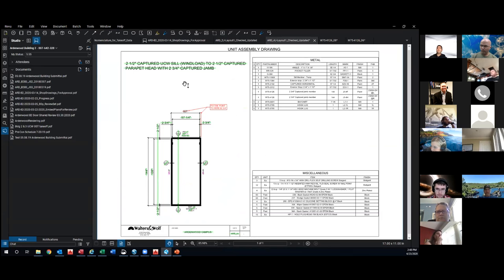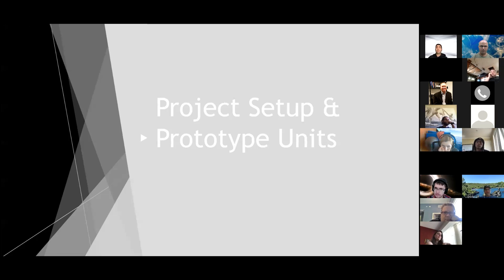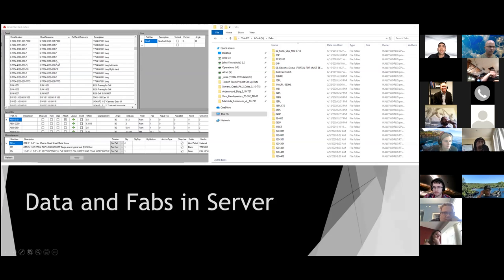Once all the units have been updated, all the data and fabs have been standardized, checked, and okayed, everything is ready for upload. The server standard detail is where we store all of our information and data. We tie it with the Revit resource, which is the family names. This is where we upload all of our data, and on the right side, this is where we upload all of our fabs. So data and fabs are both uploaded to the server.